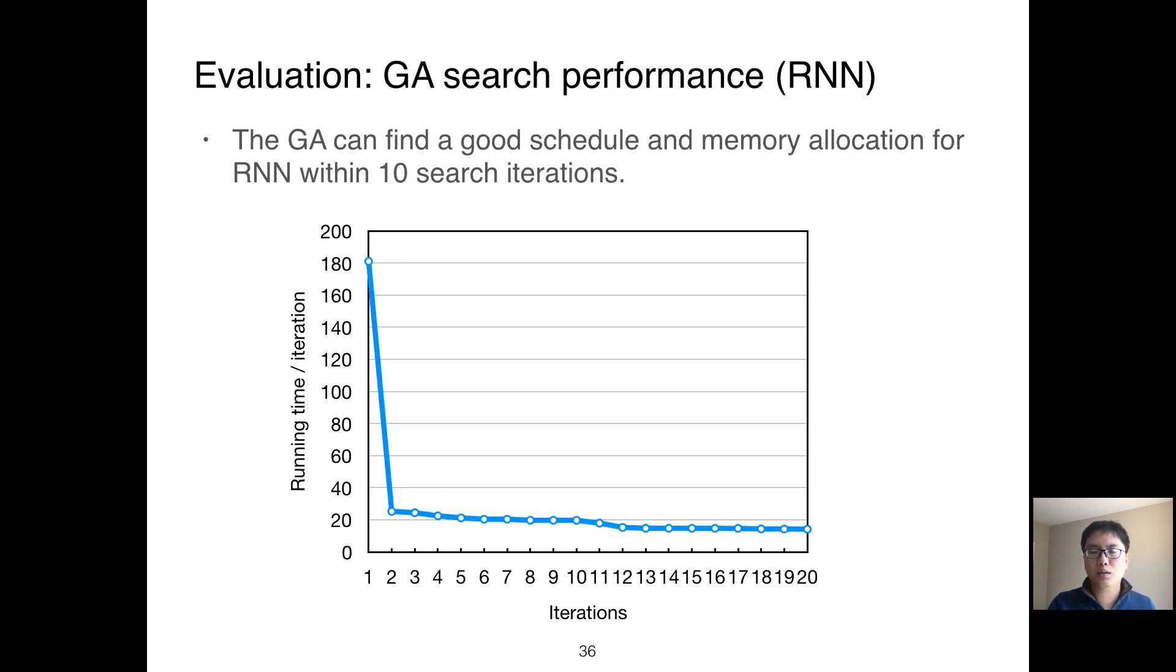This figure shows the search result versus search iteration for eight layers RNN. The y-axis is the running time per training iteration for RNN, and the x-axis is the genetic algorithm search iteration. We can see that in the beginning, before any search is performed, all schedules and memory allocations are randomly generated, and the running time is very bad—more than 180 seconds. Within 10 iterations, the performance is quickly improved to less than 20 seconds per iteration. This demonstrates that genetic algorithms actually help SwapAdvisor quickly find a good schedule and memory allocation.